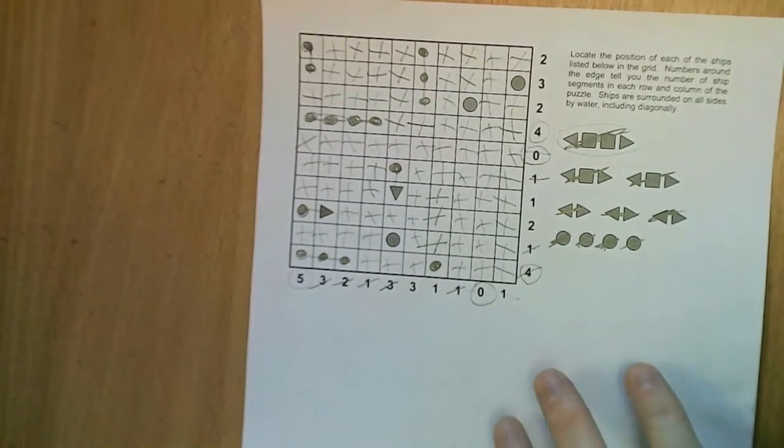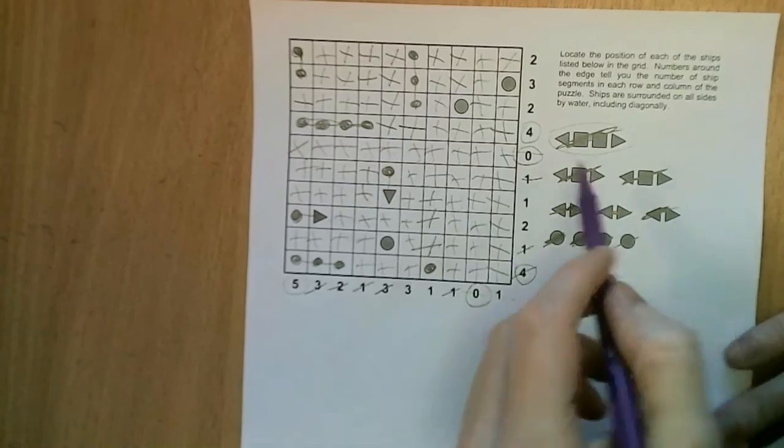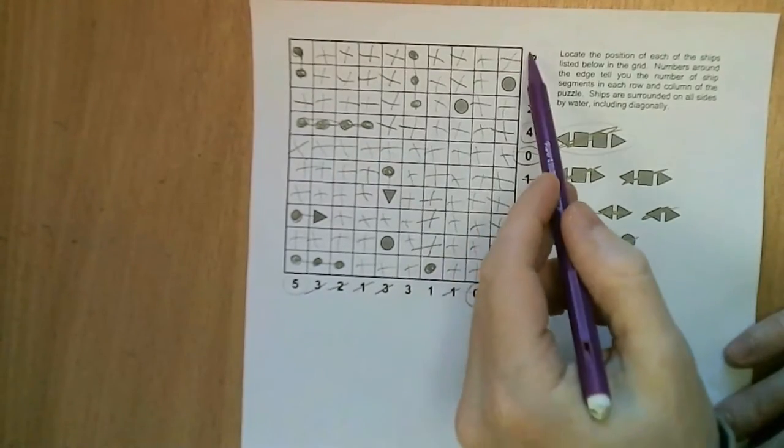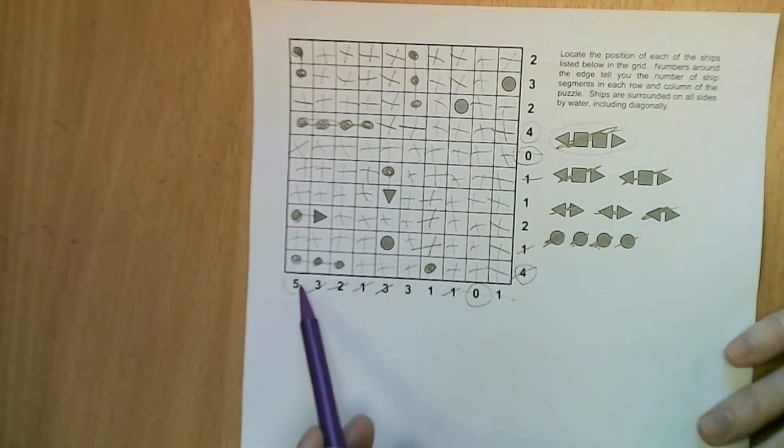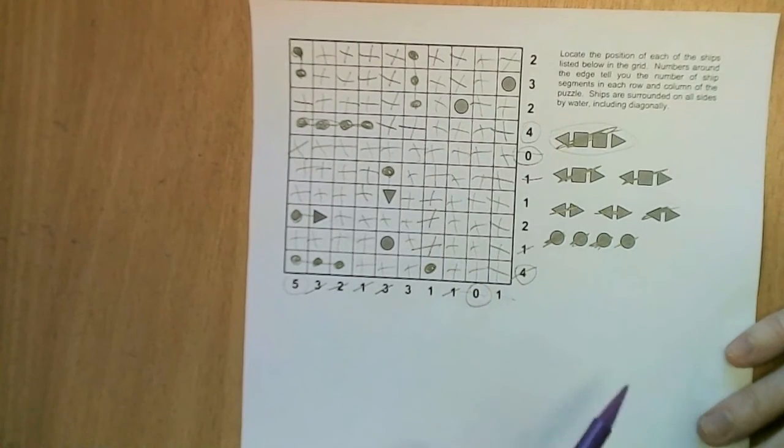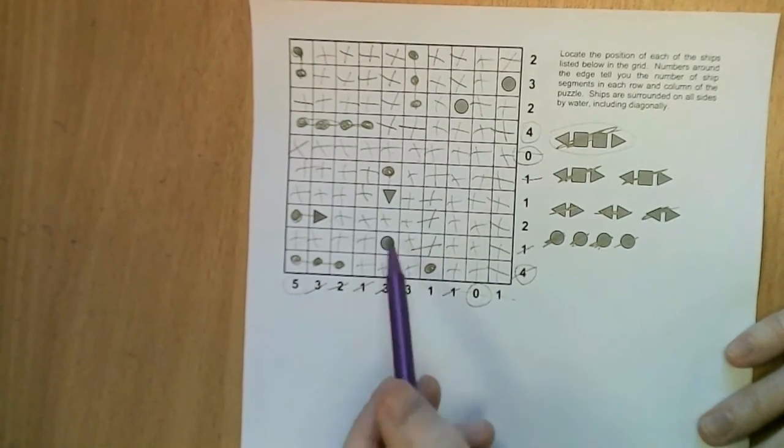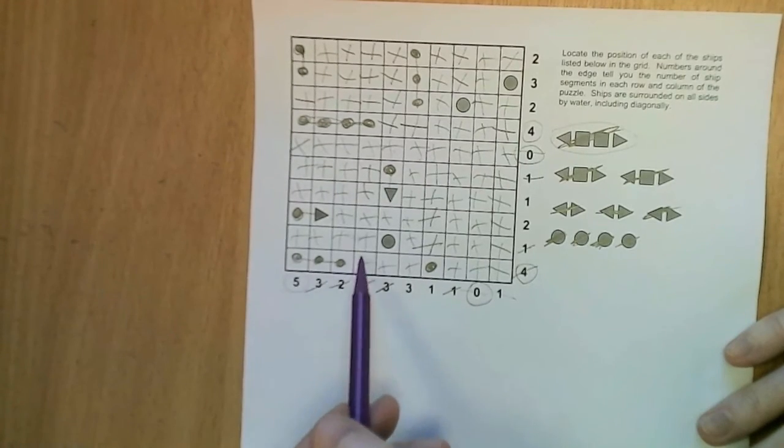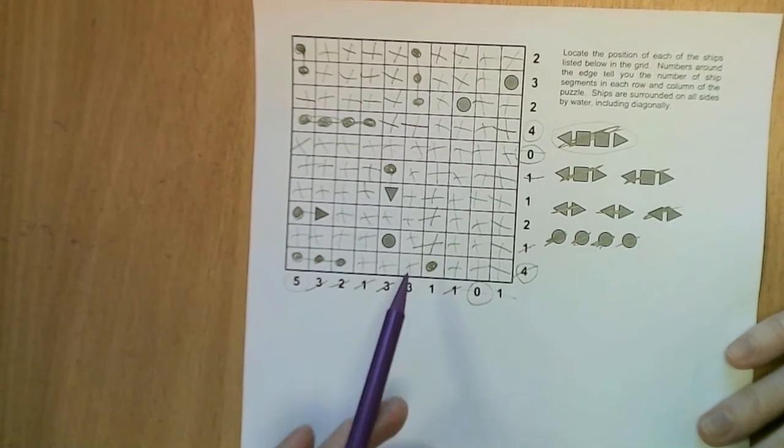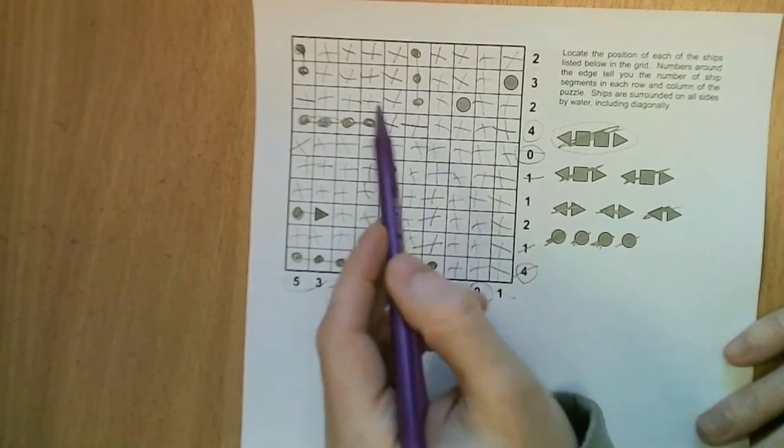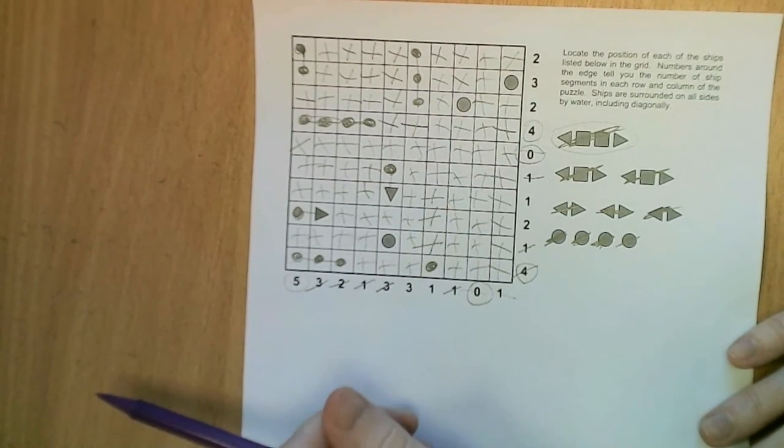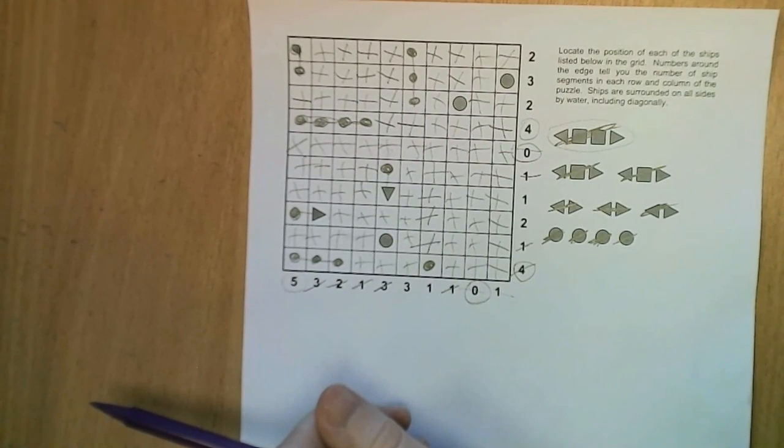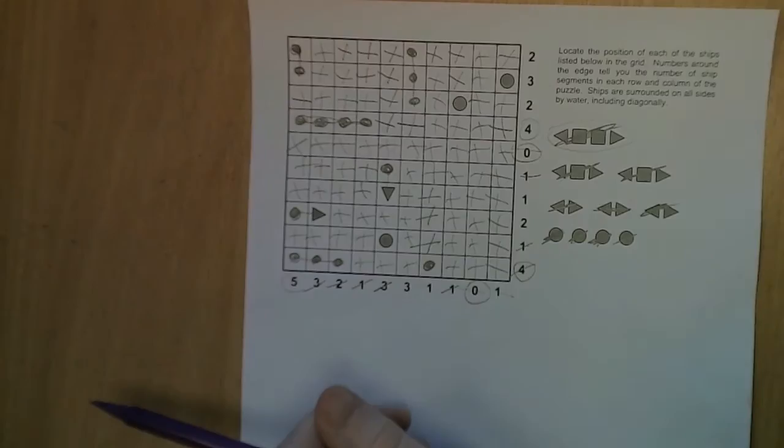Okay and that is how to solve a battleships puzzle. So you can see we've placed 10 ships into the grid, the numbers around the edge are telling us how many ship segments are in each row and column, and every ship segment, or every ship I should say, is surrounded by water on all sides including diagonally so that no ships touch each other at all. And that's how to solve a battleships puzzle, hope you found that video useful, see you again soon.